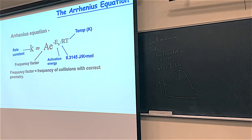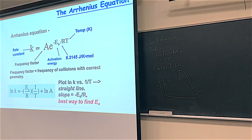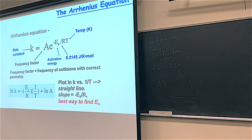There's also something called the frequency factor A. This involves the anti-natural log, the e^x button. This is one form of the Arrhenius equation. But I recommend focusing on what happens when you take the natural log of the Arrhenius equation. Natural log and e cancel out, so E_A over RT is just a number.